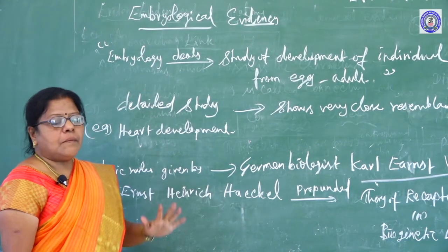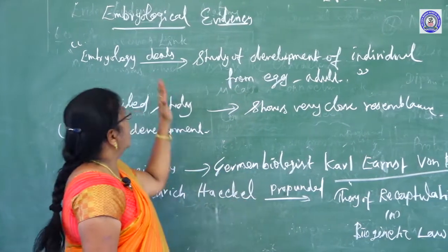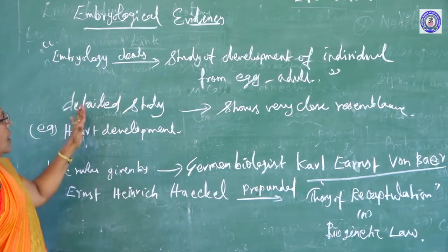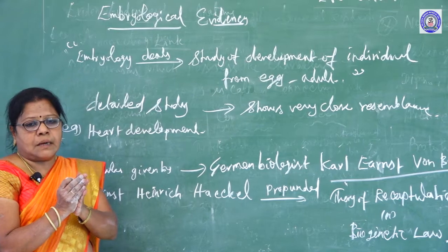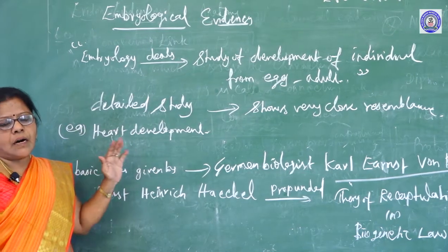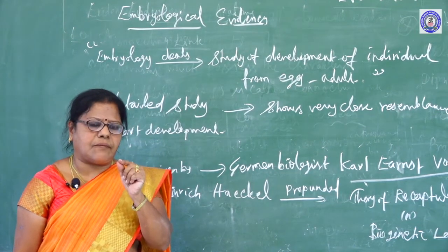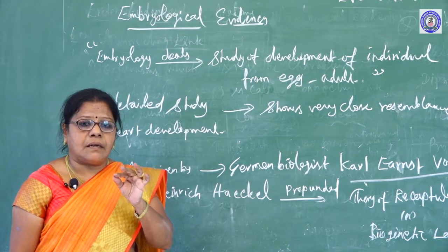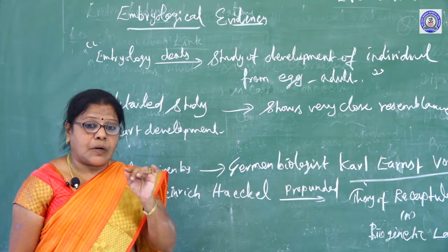Embryological evidences: embryology deals with the study of development of an organism from egg to adult. The detailed embryological development shows very close resemblance among organisms. For example, heart development in all vertebrates — first, a pair of tubular structures form, which later develop into a two-chambered heart in fishes, three-chambered heart in amphibians.